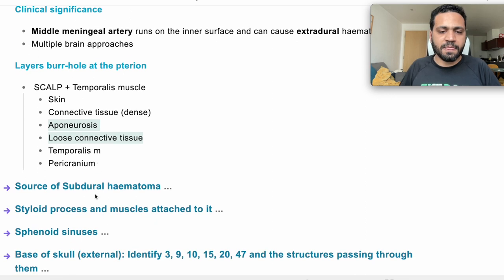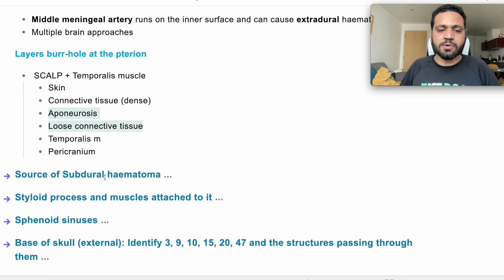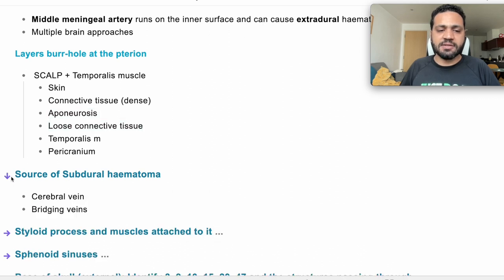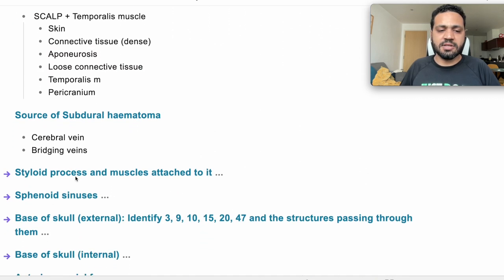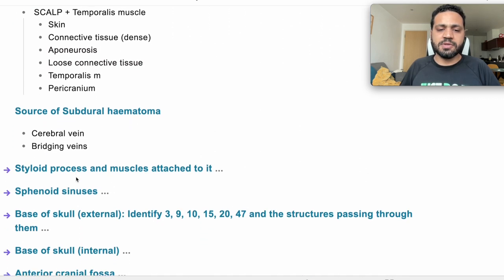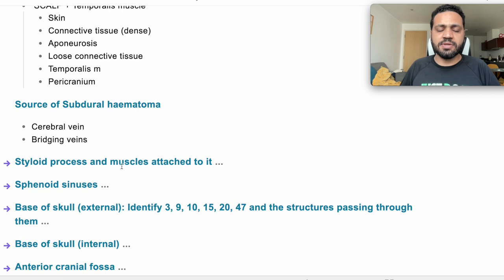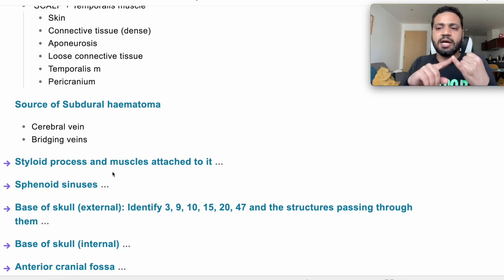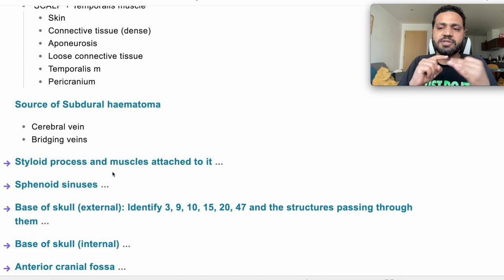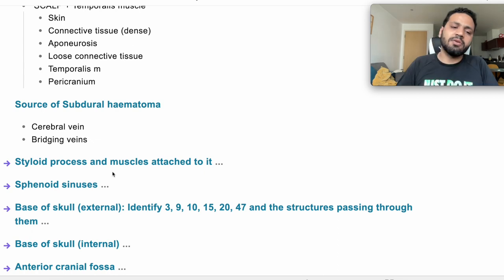What is the source of a subdural hematoma? The bridging veins and cerebral veins. Styloid process and muscles attached to it: the muscles attached to the styloid process are styloglossus, stylopharyngeus, and the stylohyoid muscle as well.